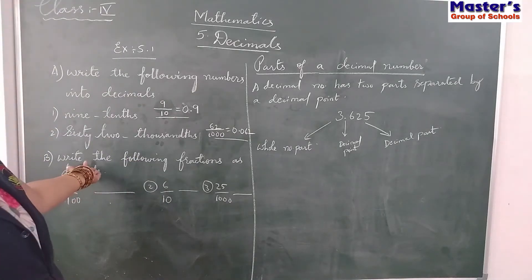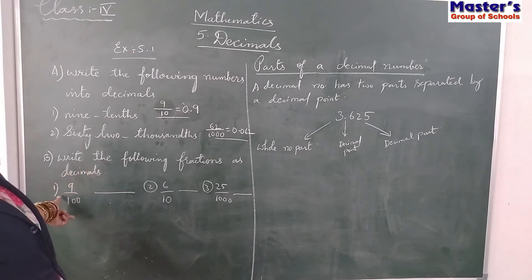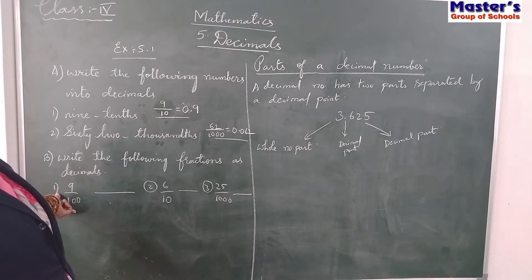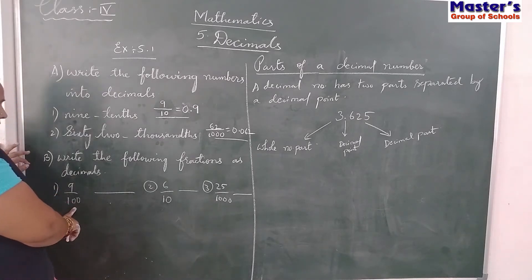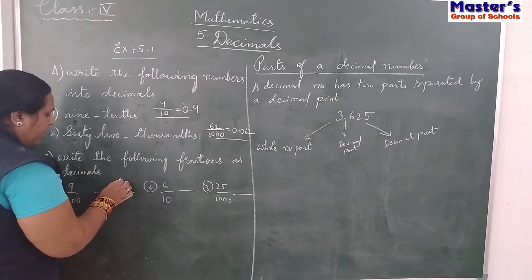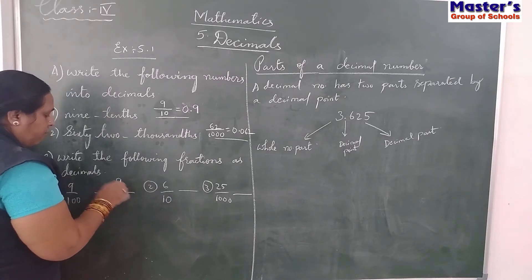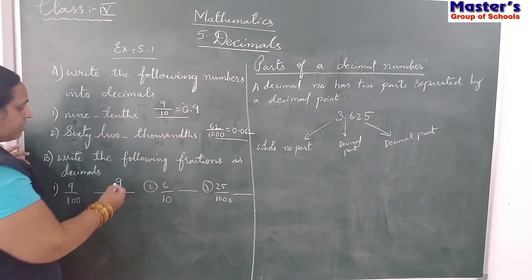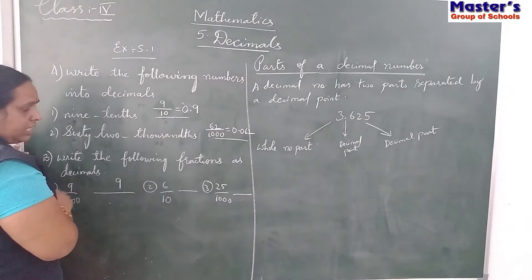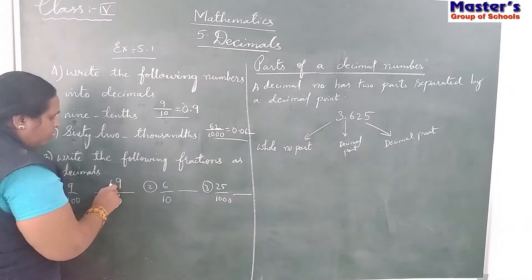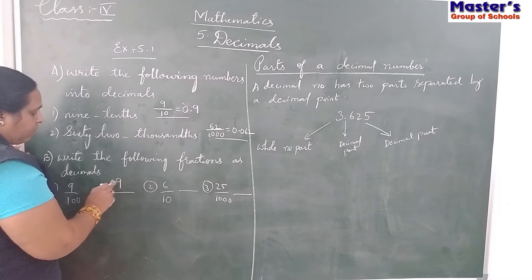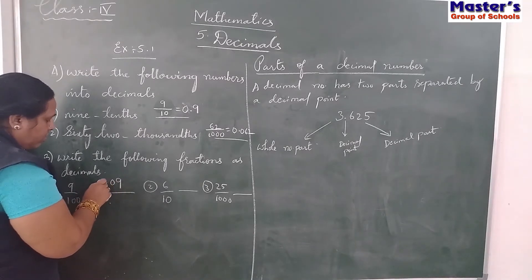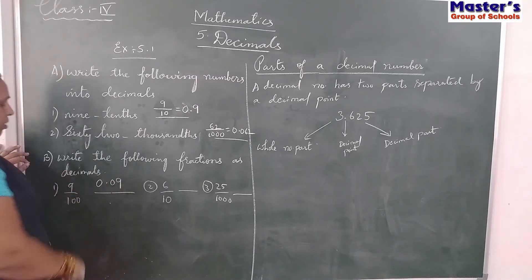Similarly here, write the following fraction as decimal. You have to write in decimal form. Same thing - 2 zeros are there. So to this numerator, after 2 digits from left side. But here we are having only 1 digit, so make it as 2 digits by keeping 1 more 0. After 2 digits from left side, then we get the point. This is 26/100th.